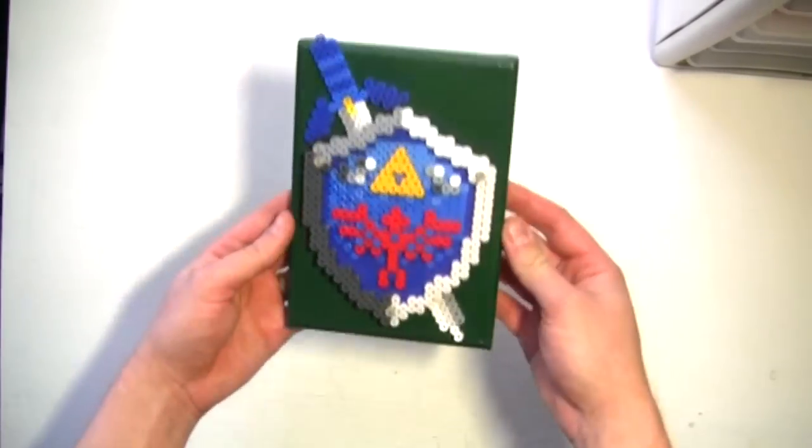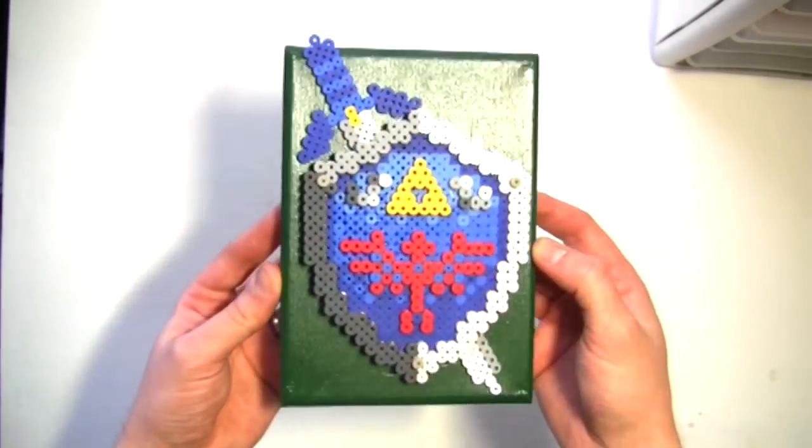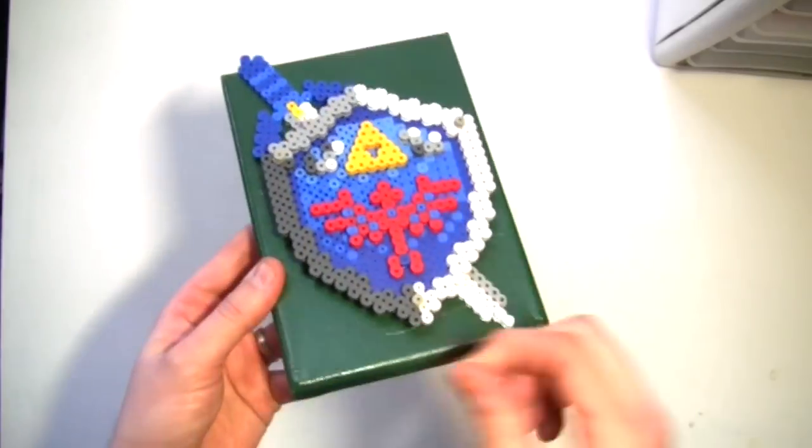That's five layers overall: canvas, sword, faceplate, frame slash designs, and bolts.